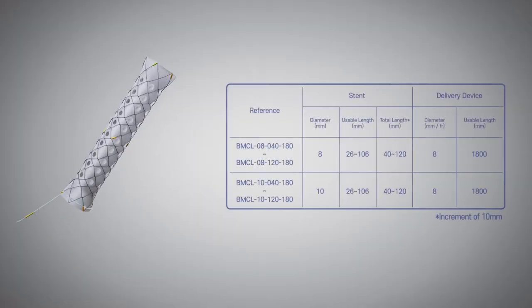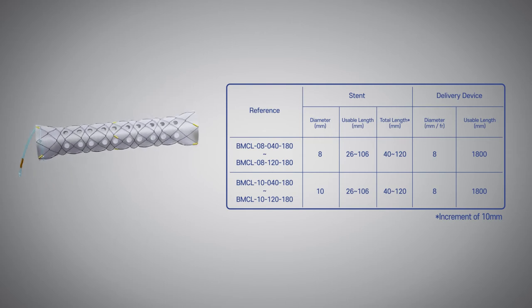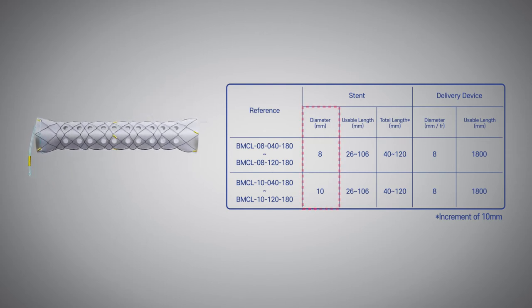Multi-hole biliary stent offers a broad selection of sizes to fulfill the user's demand. The diameters are 8-10 mm and the total length is from 40-120 mm with increment of 10 mm each.